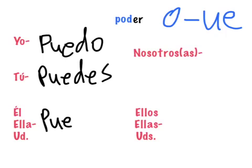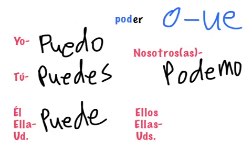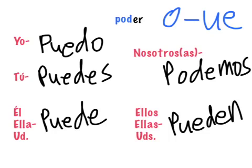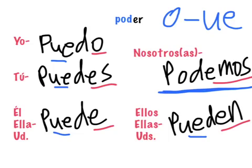So: puede. Nosotros podemos. And ellos, ellas, ustedes pueden. A couple of things to point out: the endings O, ES, E, AMOS, EN are the same — they change normally. The stem changed in four places, but it did not change in the nosotros form. Stem-changing verbs never change in the nosotros form.